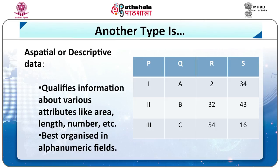GIS also stores the linkages between the two. So data is stored as spatial, a-spatial, and linkages. So till now we have learnt six words, five words, and now three more — that's fourteen key concepts, meaning I am halfway through my lecture.